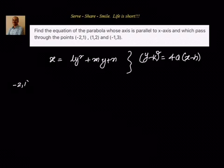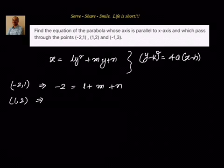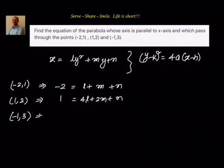We substitute the three points. First, point (-2, 1): minus 2 equal to l plus m plus n. Next, point (1, 2): 1 equal to 4l plus 2m plus n. Then point (-1, 3): minus 1 equal to 9l plus 3m plus n.